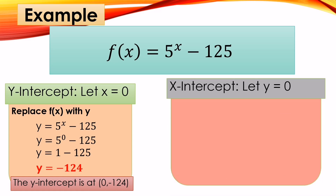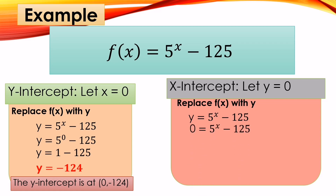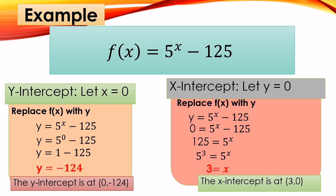For the x-intercept of f(x) = 5 raised to x minus 125, let y = 0. Substitute: 0 = 5 raised to x minus 125. Move negative 125 to get 125 = 5 raised to x. Find the common base: 5 cubed equals 125, so 5 cubed = 5 raised to x. Equate the exponents: 3 = x. Therefore, the x-intercept is at (3, 0).